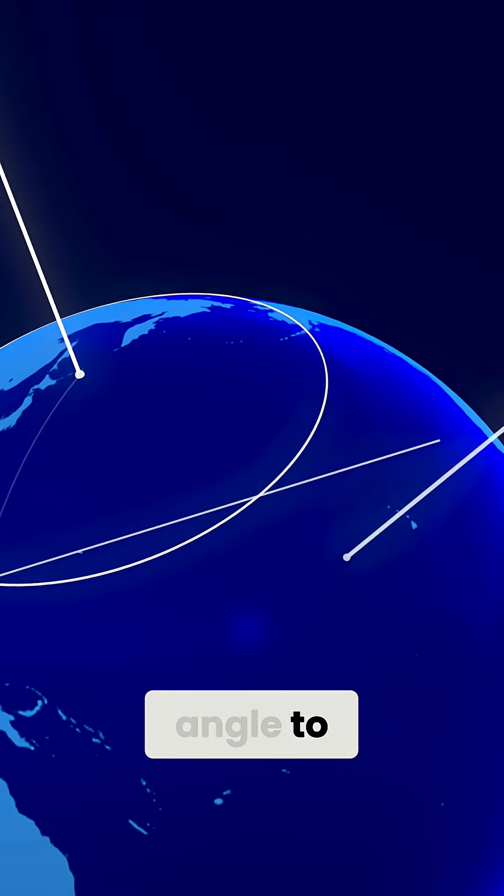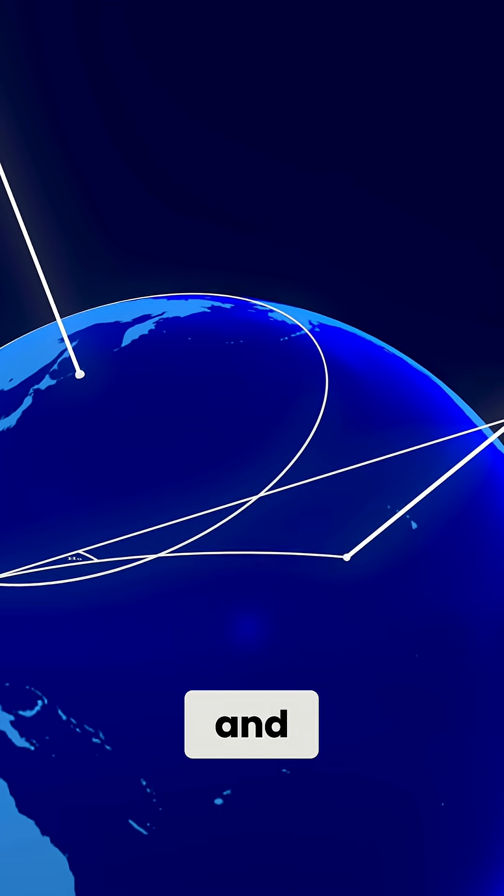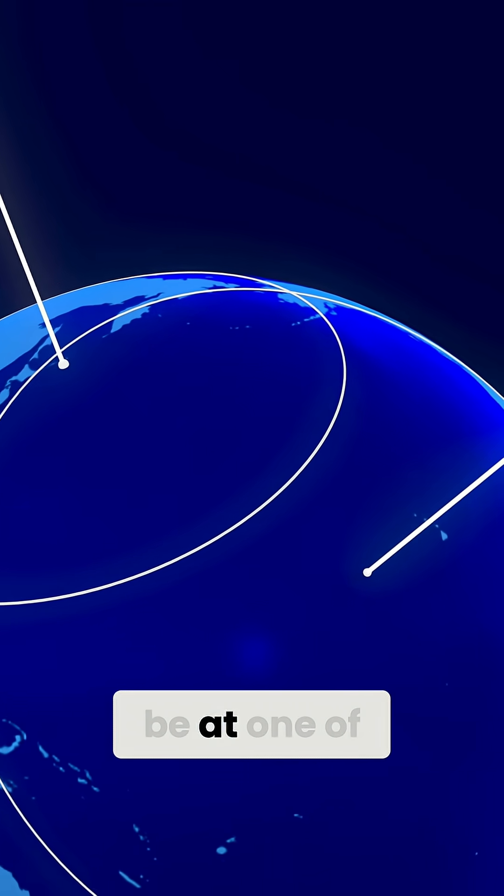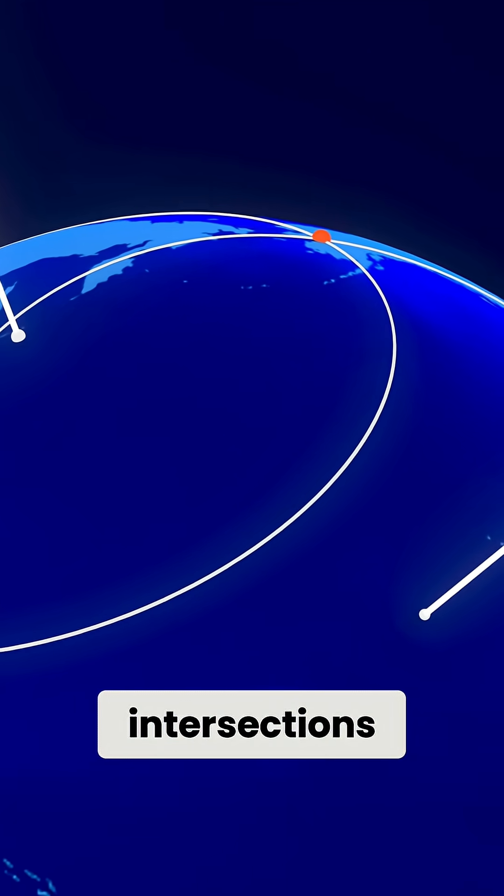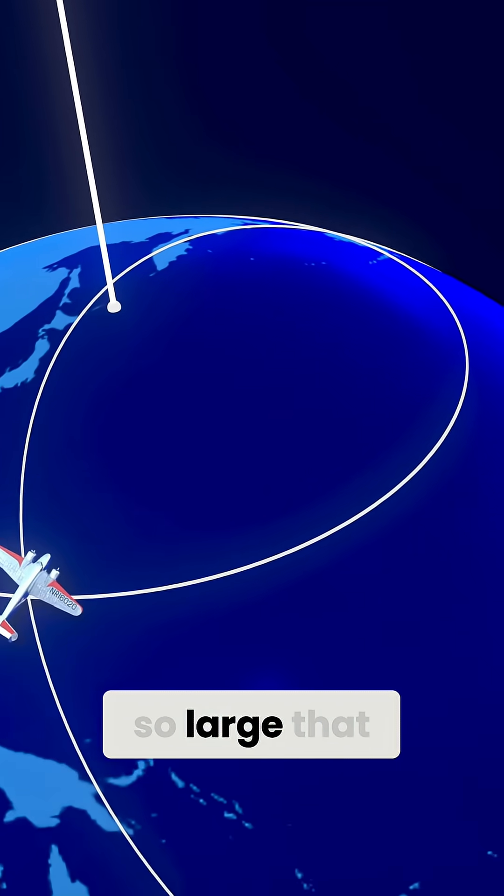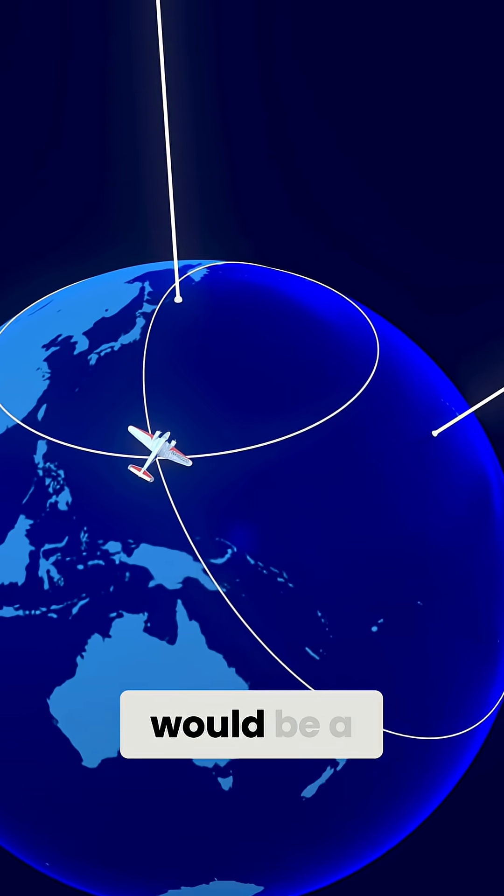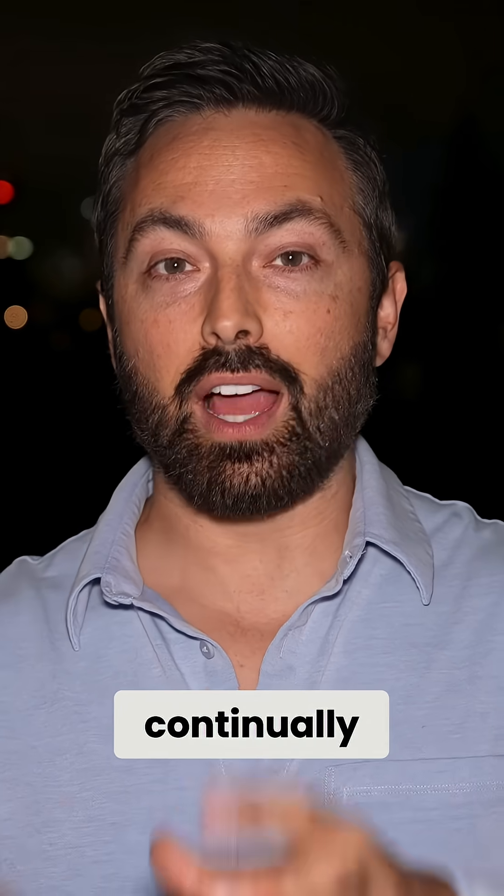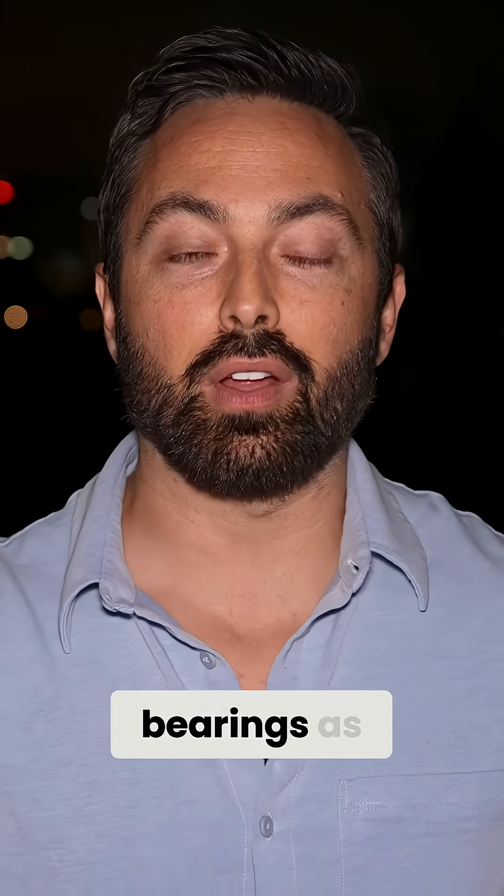And then he would measure the angle to another navigation star and draw out a second circle. And now they must be at one of these two circle intersections. Normally, the circles were so large that only one of the intersections would be a plausible position. That way, they could continually update their location and adjust bearings as needed.